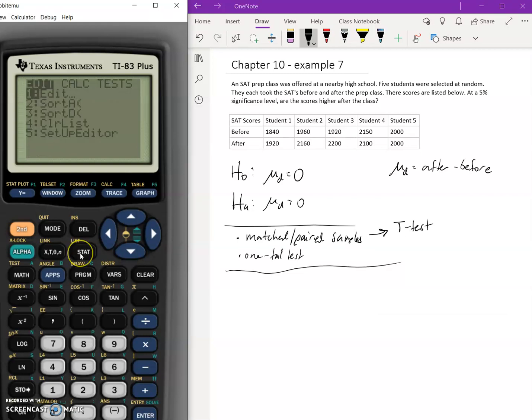Now we can go back, press stat, go over to tests, and down to t-test. When we enter in our data, we enter it as a normal single sample test. So our mu sub zero in this case is simply zero. Our list is L1, our frequency is one.